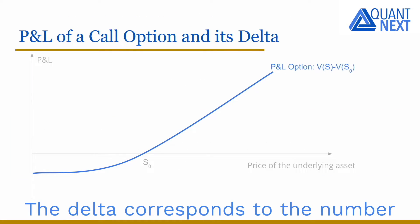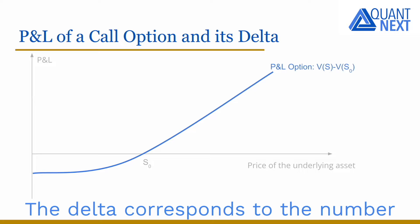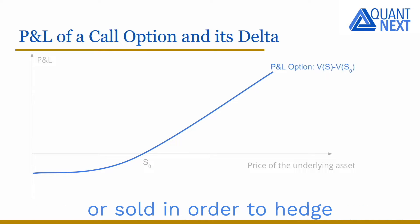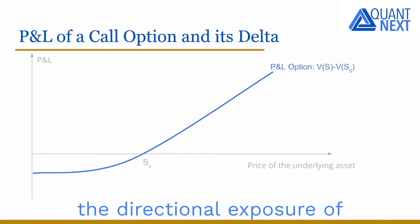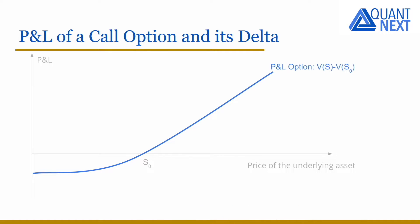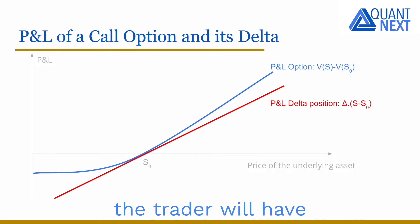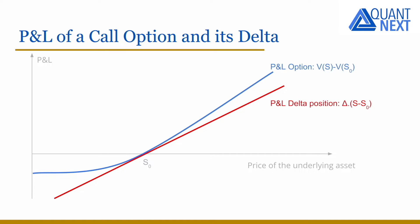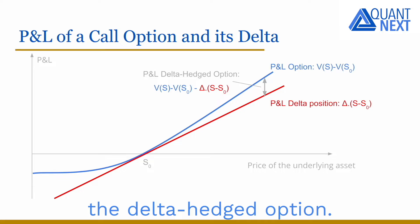The delta corresponds to the number of underlying assets to be purchased or sold in order to hedge the directional exposure of the option position. For example, for a call option, the trader will have to sell delta stocks. The residual is the delta-hedged option.